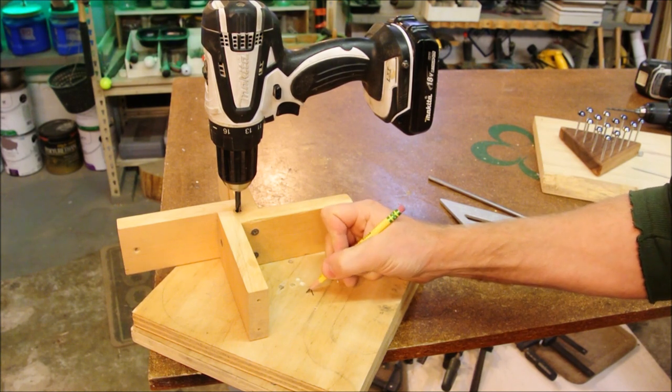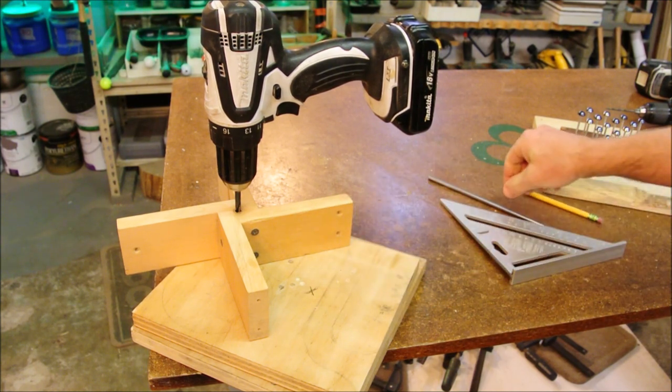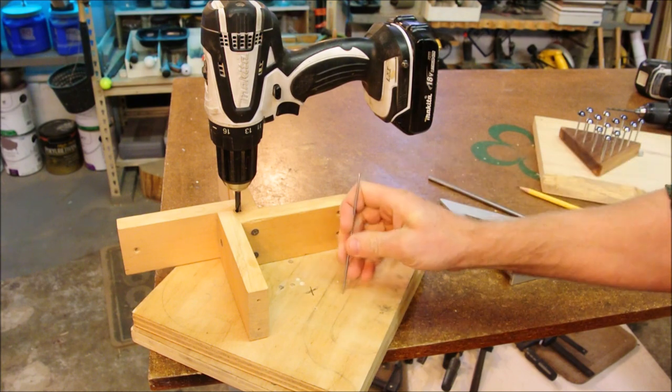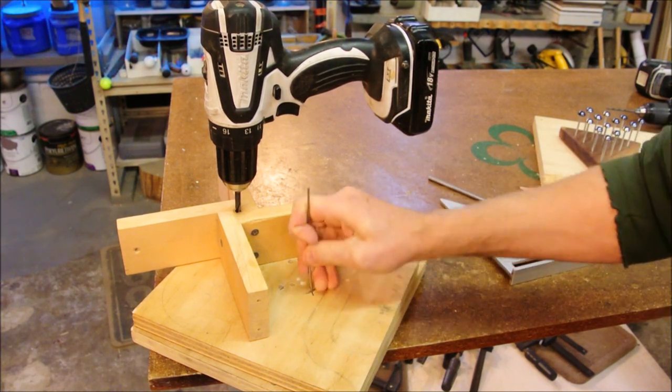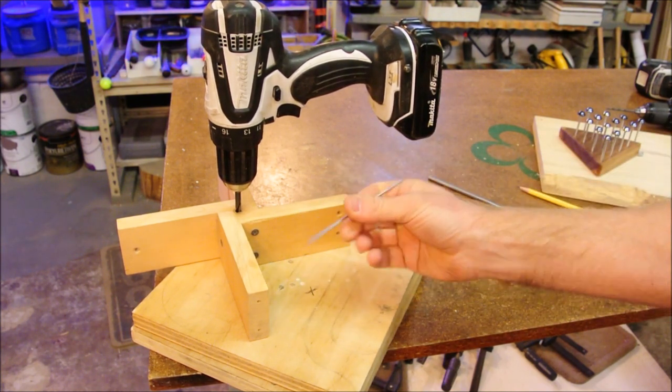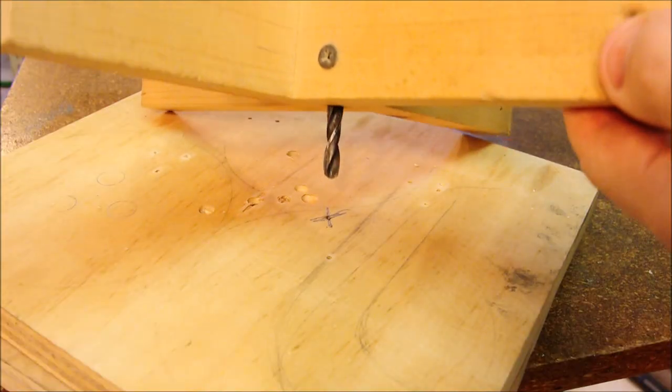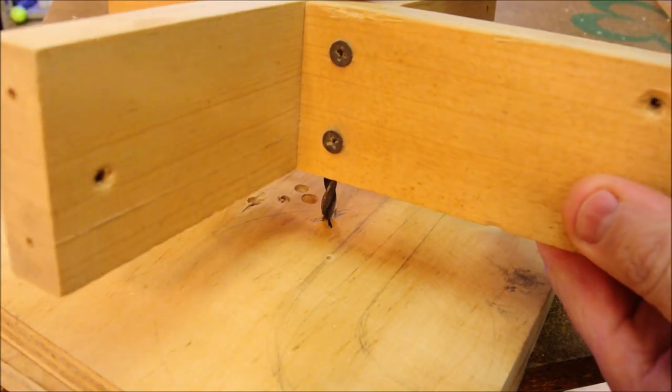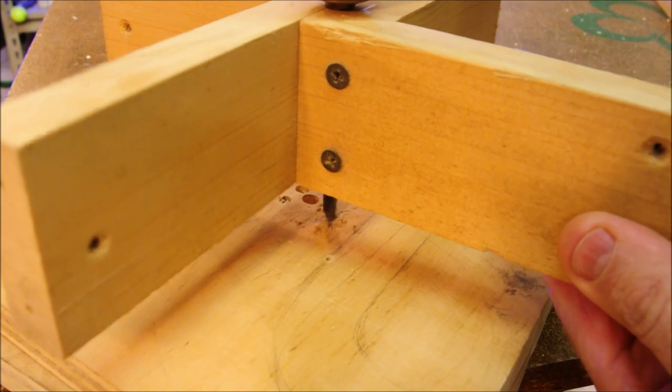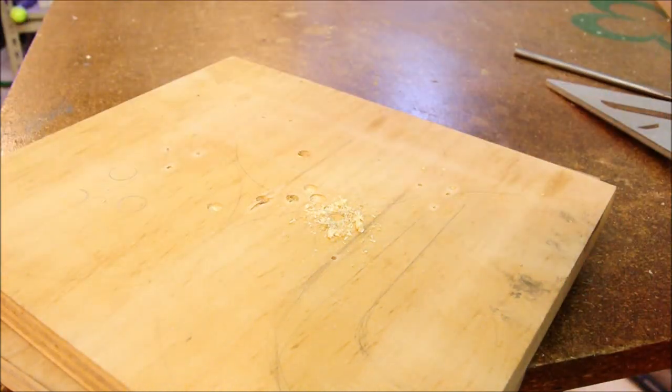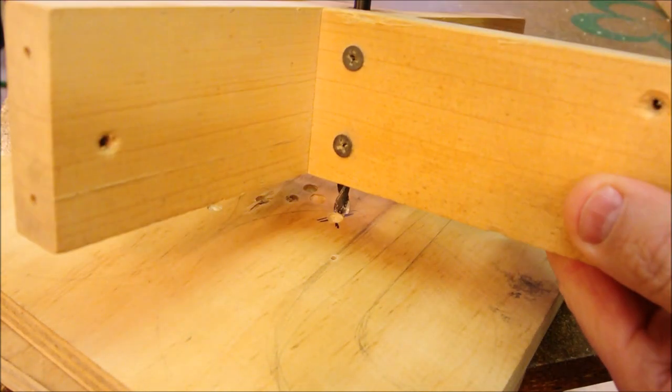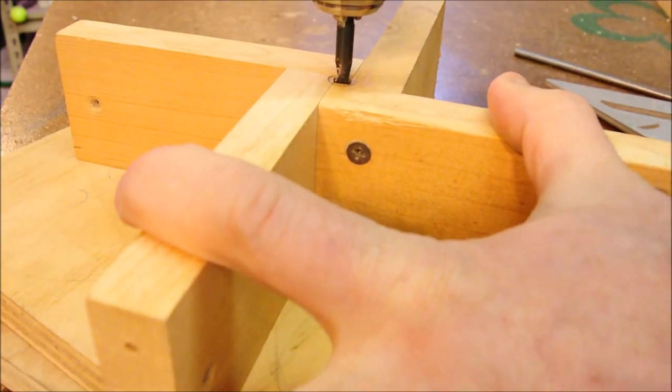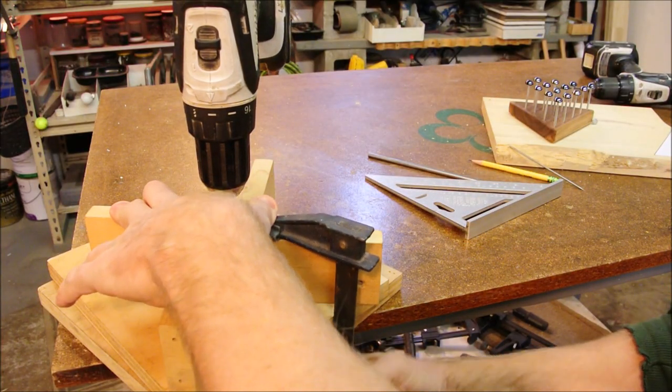Let's pretend we want to make a hole right here on that X. That's just a piece of sharpened coat hanger. For best possible results, we clamp.